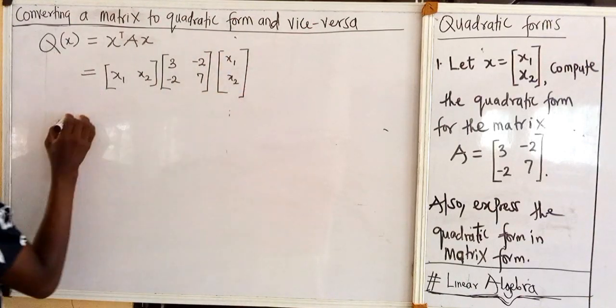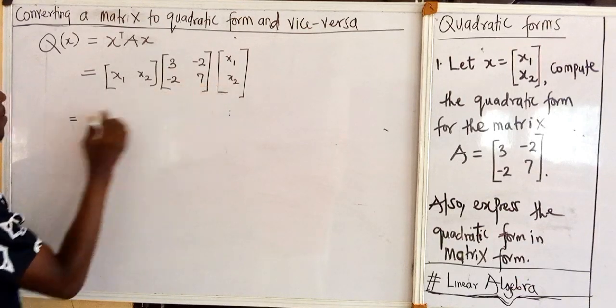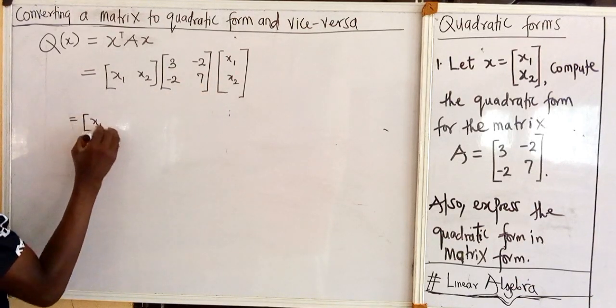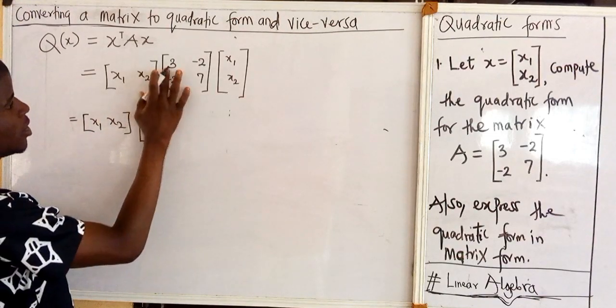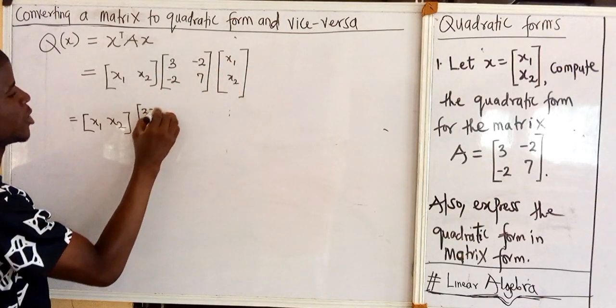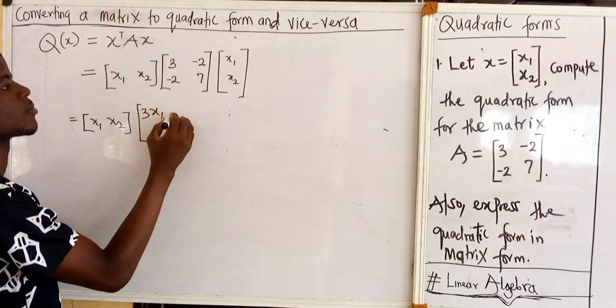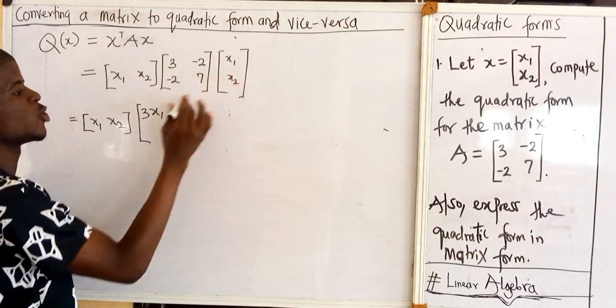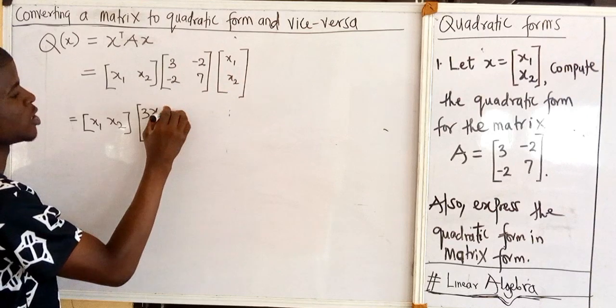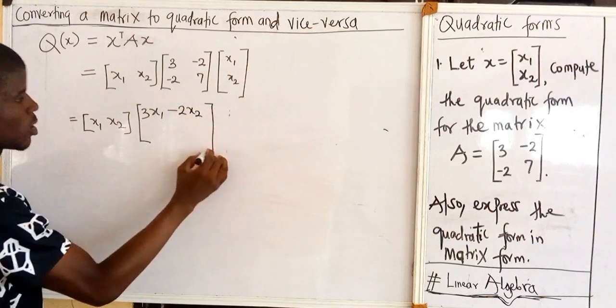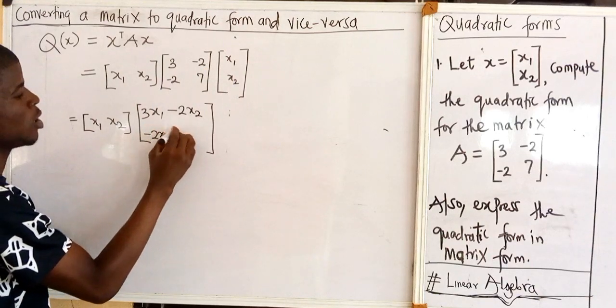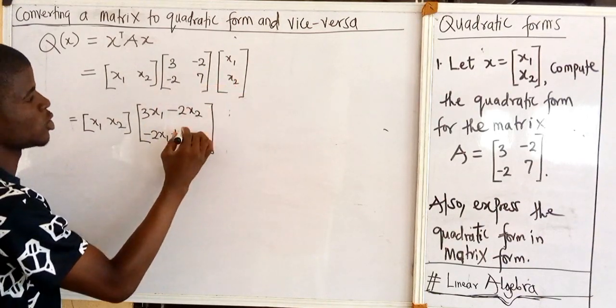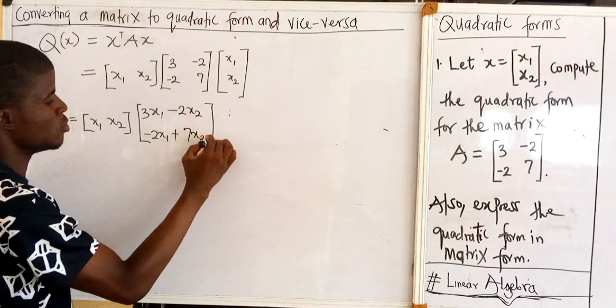So now we are going to multiply this. To me this is first, so x1 x2 remains times this: 3 times x1 is 3x1 plus minus 2 times x2 is minus 2x2. Minus 2 times x1 is minus 2x1 plus 7 times x2 is 7x2.